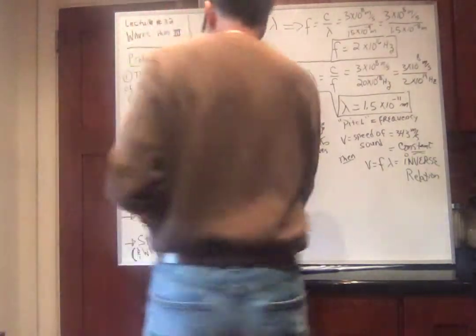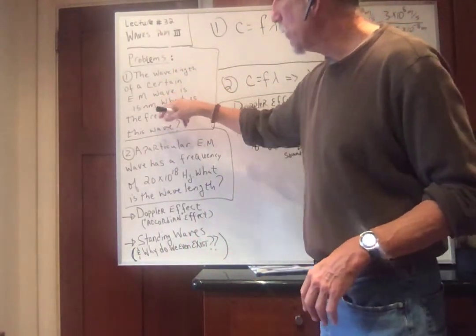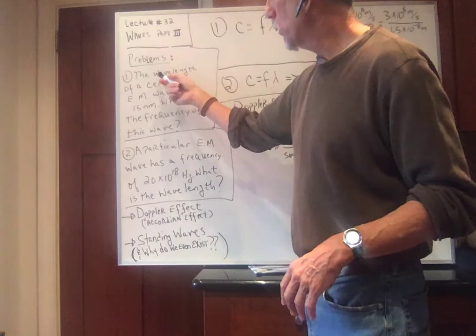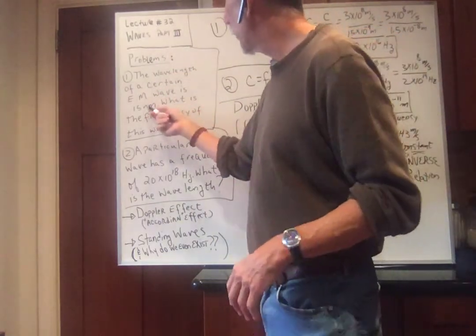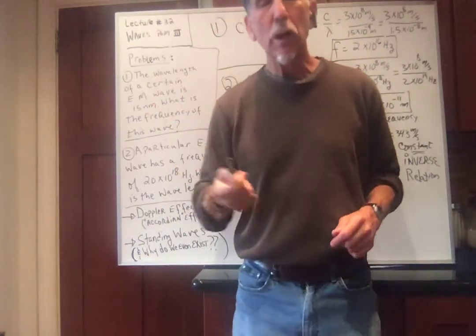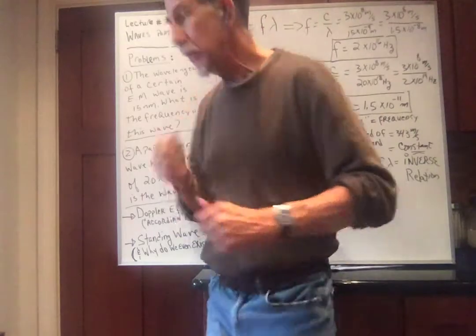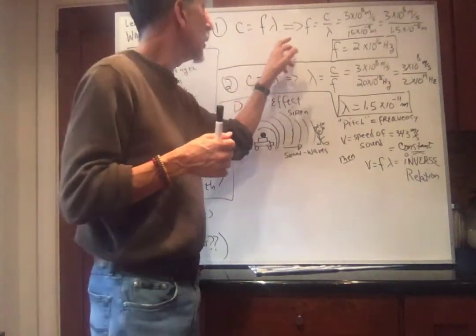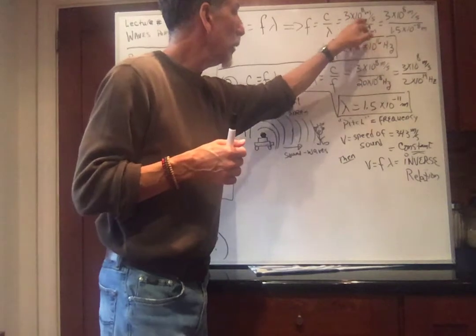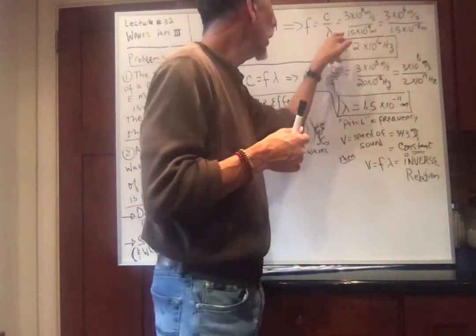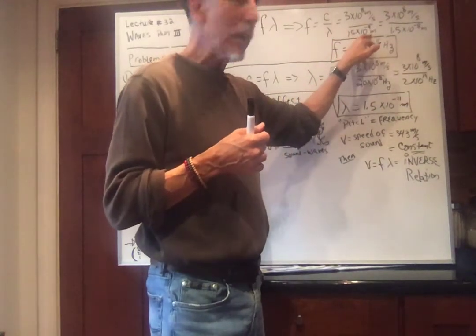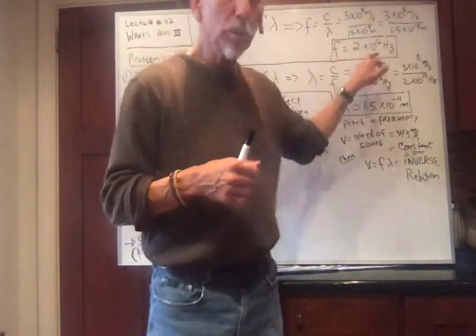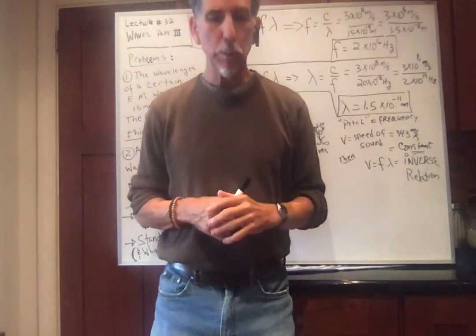The wavelength of a certain electromagnetic wave is 15 nanometers. What is the frequency of this wave? So we know the wavelength is 15 nanometers, and the speed is always the speed of light, C. C is F times lambda, so the frequency is C over lambda: three times 10 to the eighth meters per second divided by 15 times 10 to the minus 9. That gives a frequency of 2 times 10 to the 16th hertz.